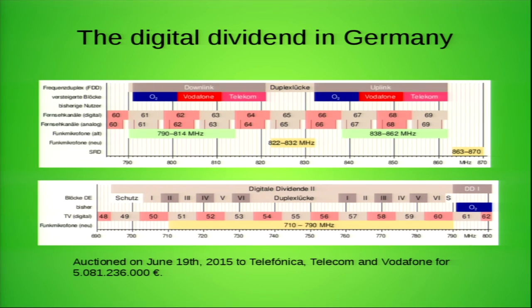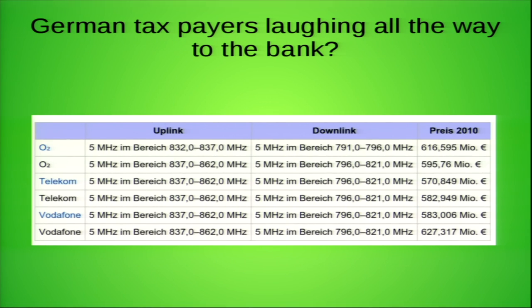The lower picture shows the auction that just happened on June 19th: 5 billion euros was auctioned off to the three big mobile operators in Germany for a considerable amount of time. So are we all laughing all the way to the bank? Well, if we are bright, no — we are not going to do that.